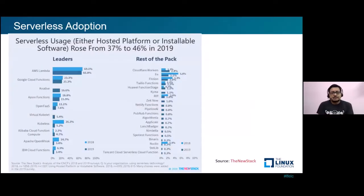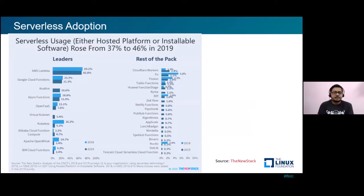Looking at adoption, serverless usage has grown to about 46% in the year 2019 according to a report published by The New Stack. AWS Lambda and Google Cloud Functions occupy the top two positions in the leadership board due to larger adoption among end users. However, there are many new entrants also coming up the ladder, showing a good amount of adoption of serverless at the community level to drive different business use cases.